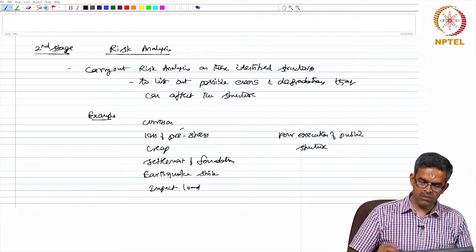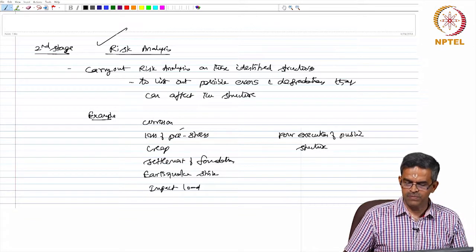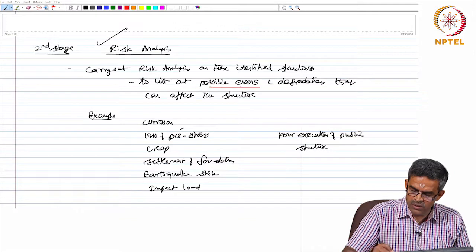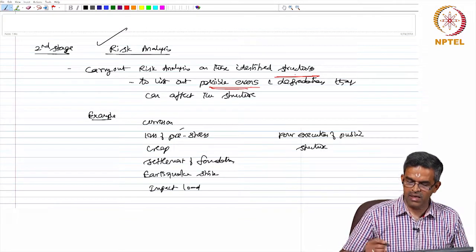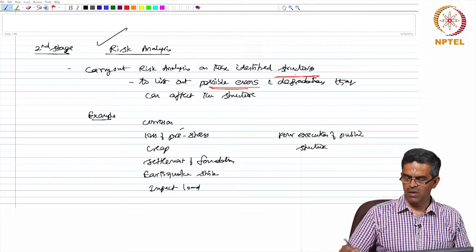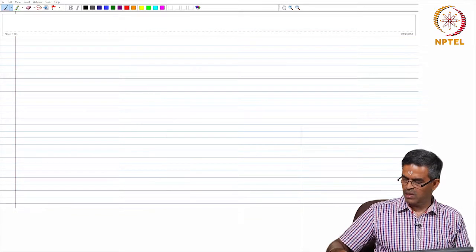Impact load effects and above all poor execution of the structure. So, let us carry out the risk analysis to identify what are the possible events and the degradations that can happen to the structures. That is the second stage before we plan for long-term structural health monitoring.